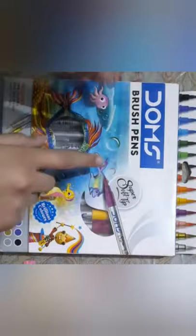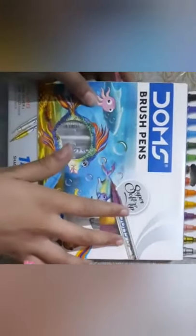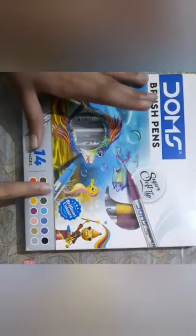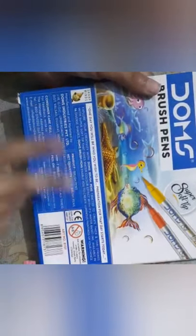These are the Domes brush pens in 14 diverse shades. You can see over here, I included one golden and one silver shade. At the back side, there is more information about it, and there is something written over here. You can see there is one warning too, that this is not for under the age of 3 years.